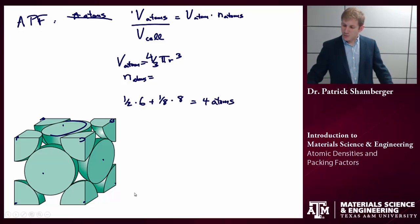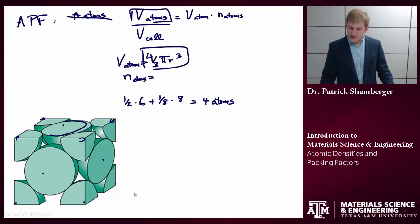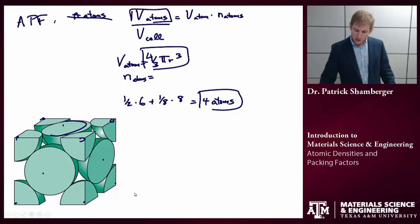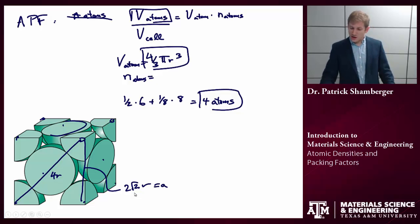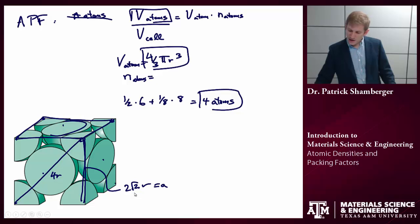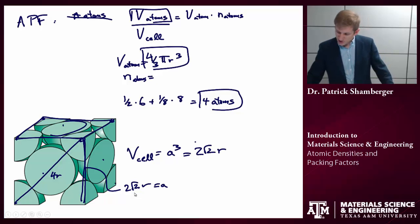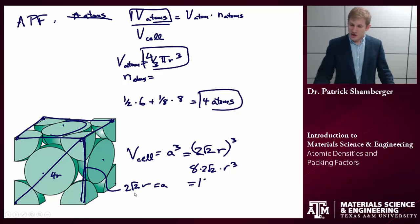The volume of atoms is the volume of a single atom times the number of atoms. What is the volume of the cell? This diagonal is 4r, so each side is 2√2r. Because this is a cube, I can call that a — the length of one side. The volume of the whole unit cell is given by a³, which equals (2√2r)³ equals 8 times 2√2 times r³, or 16√2 r³.